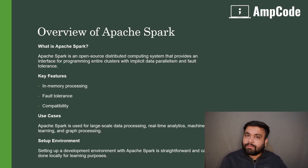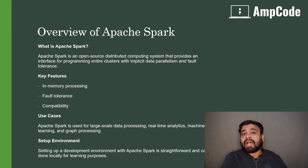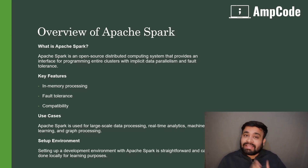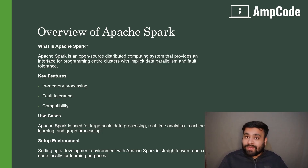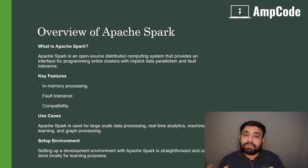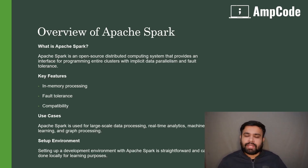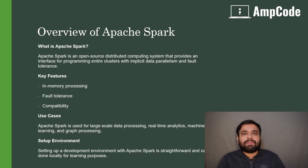Apache Spark is also fault-tolerant, meaning it can recover from failures. If any computation job fails, Spark will recover it and process it on another machine. This ensures that you won't face any data loss and Spark will still deliver the expected output.